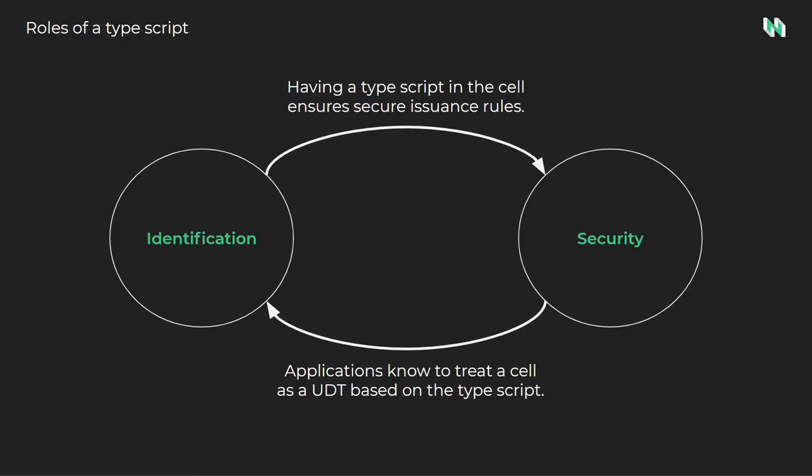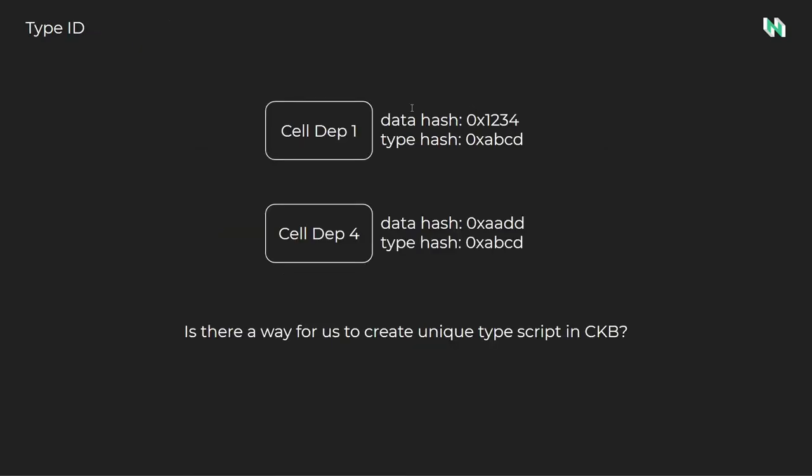When a DApp is constructing or analyzing a transaction, it can look at the TypeScript that is used, providing a means of identification. A TypeScript validates state changes — another way to think of this is that the TypeScript defines the behavior of the cell. By identifying what TypeScript is used in a cell, you know how the cell is expected to behave in a transaction. Wallets also benefit from this because it helps them identify the intent of a transaction before the user is prompted to sign.